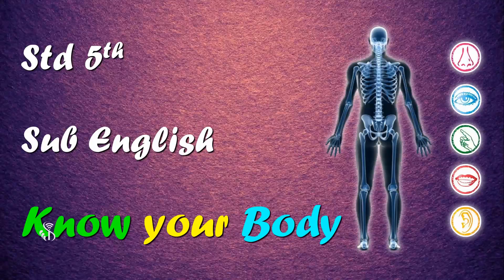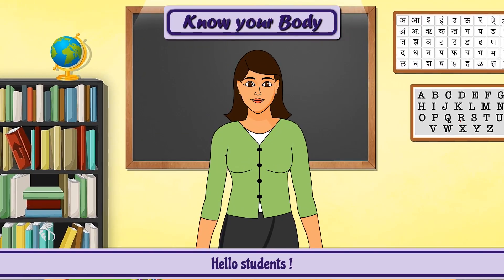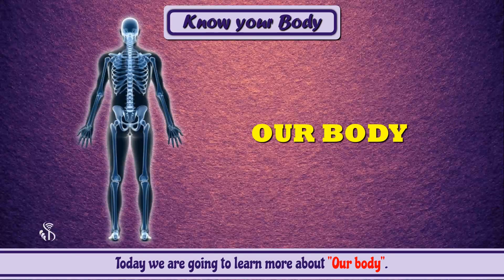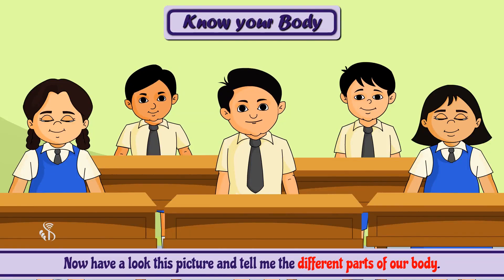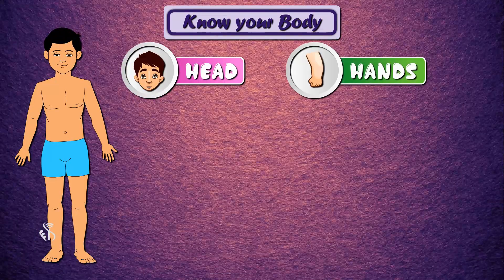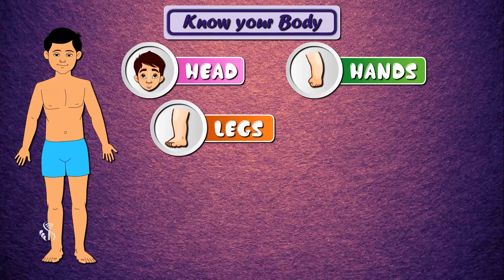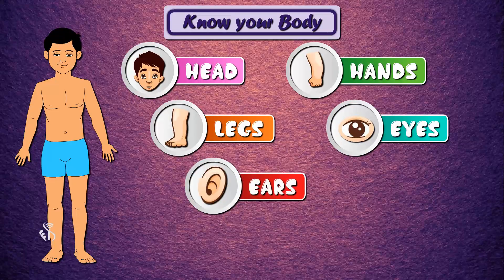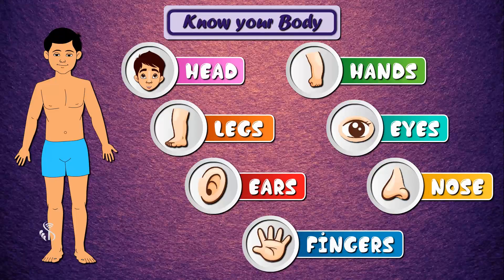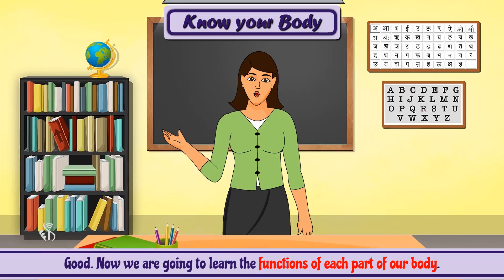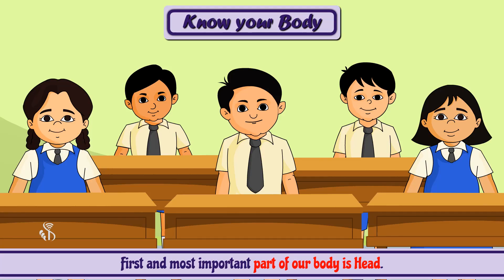Standard fifth subject English — Know Your Body. Hello students, today we are going to learn more about our body. Have a look at this picture and tell me the different parts of our body: head, hands, legs, eyes, ears, nose, fingers. Good. Now we are going to learn the functions of each part of our body.